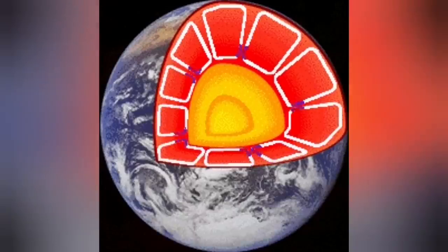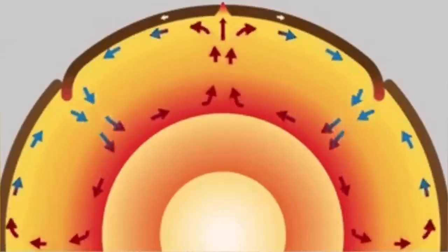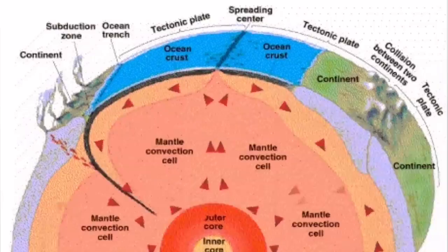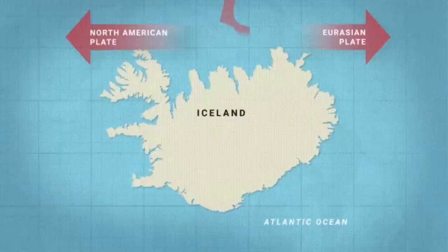This heat creates convection cells through the mantle of the Earth, which rises to the surface and cracks the hardened solidified crust of the Earth, we call it lithosphere. And through these cracks, magma can erupt.